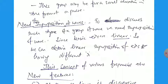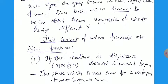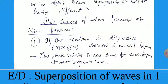To obtain this, we can add the different equations because these equations are linear, so we obtain the superposition equations. This concept varies for different features. What are the new features? If a medium is dispersive — here the refractive index or the dielectric constant is a function of frequency — then the phase velocity is not the same for each frequency of the component waves, because different frequencies have different phase velocity.